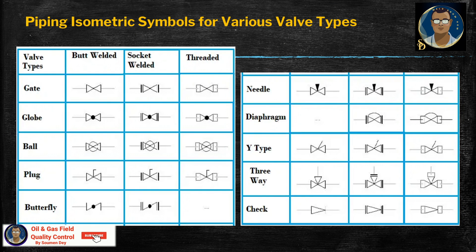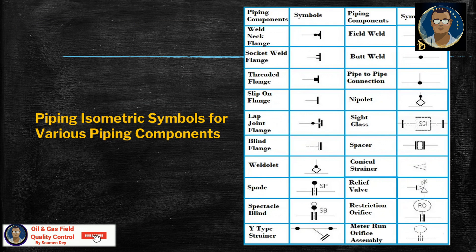The piping isometric symbols for various valve types — you can see the symbols for gate valve, globe valve, ball valve, plug, butterfly, needle, diaphragm, Y-type, three-way, and check valves. Please go through this for your better understanding.